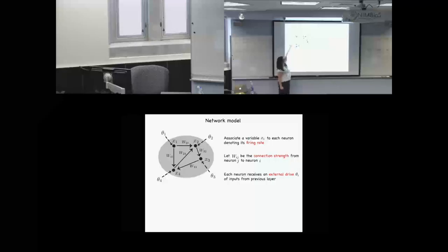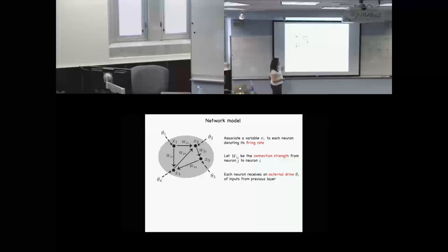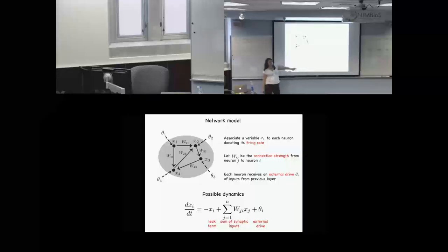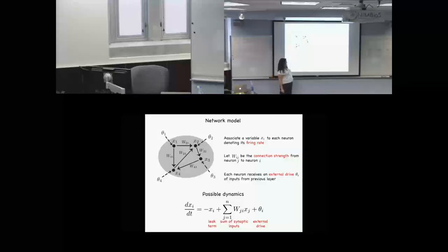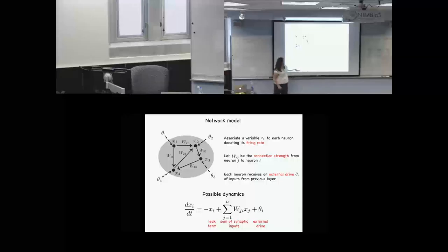Now we have ingredients, but we still need some system of dynamics that will tell us how all of these things interact and update each other. One possible set of dynamics we might consider is a linear system of differential equations. We'd have that the change in the firing rate for node i gets this leak term or decay constant, so that in the absence of other inputs, the neuron's firing rate would decay to zero.